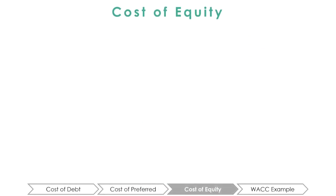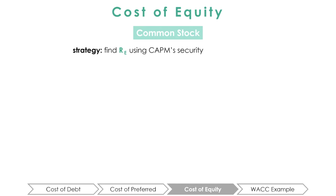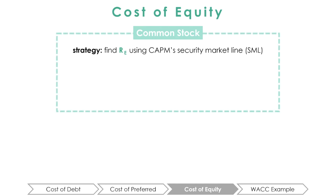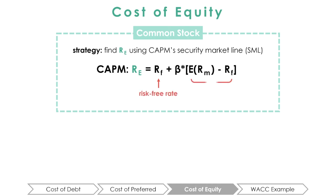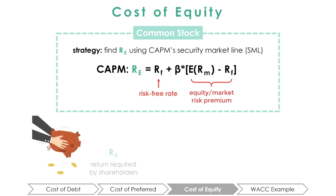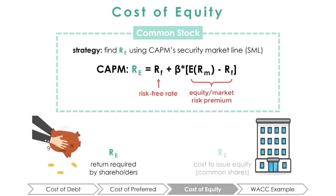Finally, we must calculate the cost of equity. The main way to calculate the cost of equity is using the Capital Asset Pricing Model, CAPM, also known as the SML approach. You should know how to use CAPM to calculate an investor's return on equity. Recall the CAPM formula: RE = RF + beta × (RM − RF). Like with the preferred shares, the return on equity for stockholders is also the cost of equity to the company.